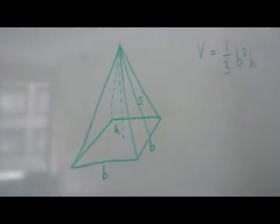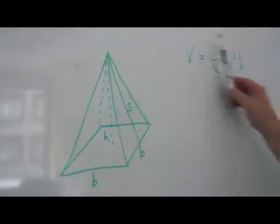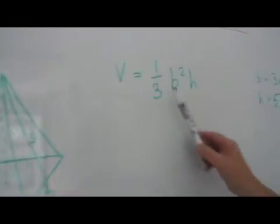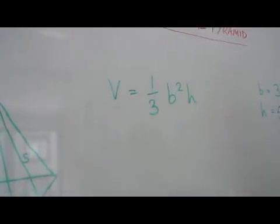To calculate this volume is not too difficult. It is just using the formula, as you can see here, one third of B squared H.